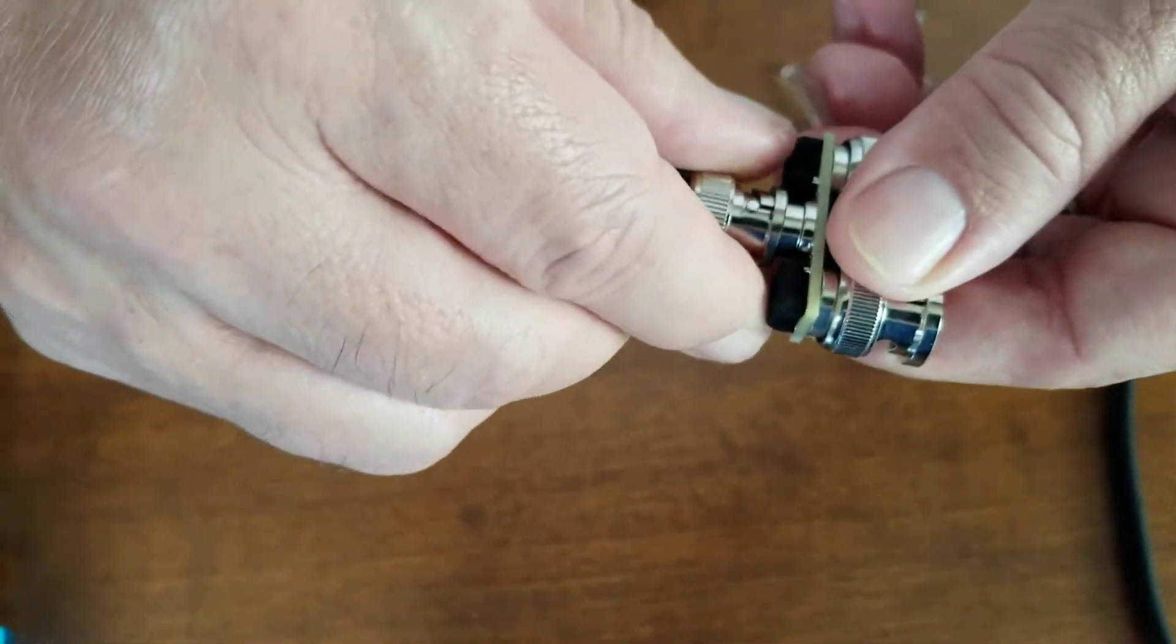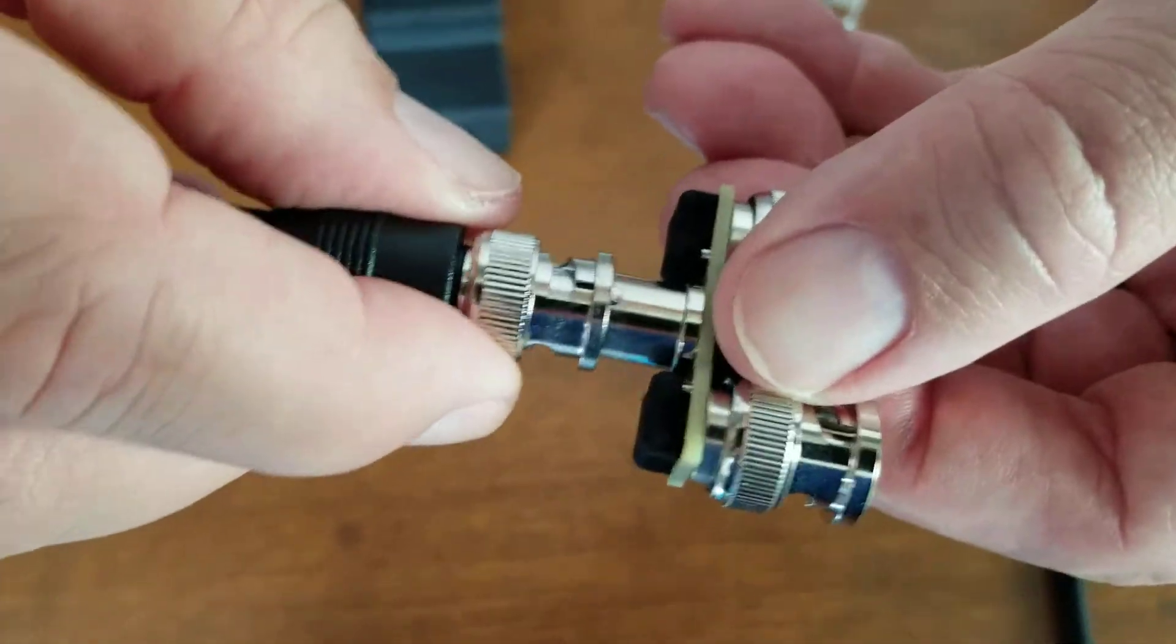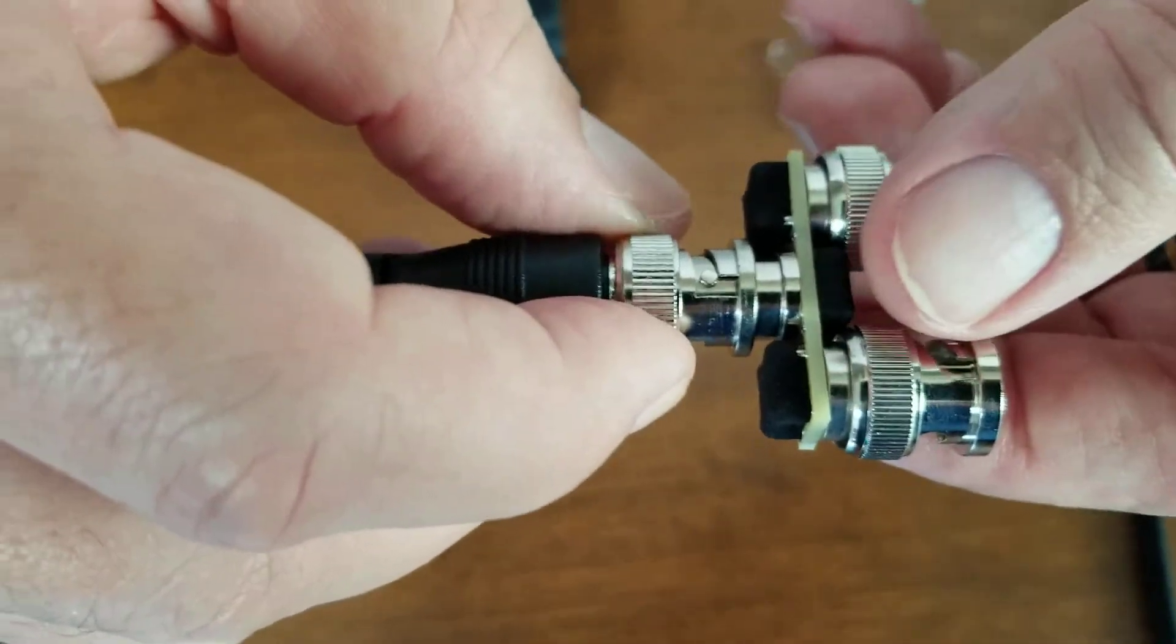So you're matching the little things on the side. Do it one more time. You're matching the little holes on the side. I'm going to pull it out.